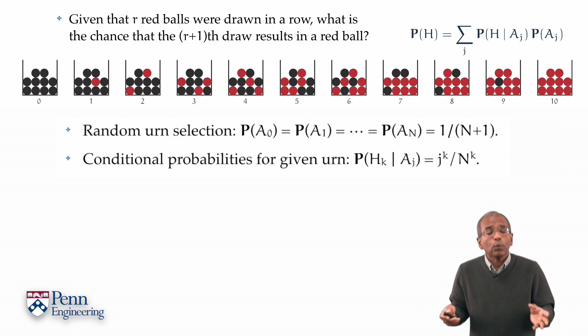With this in hand, we are quite equipped to begin an assault on the question of what does k red balls in a row say about the chance of a k plus one-eth red ball in a row.